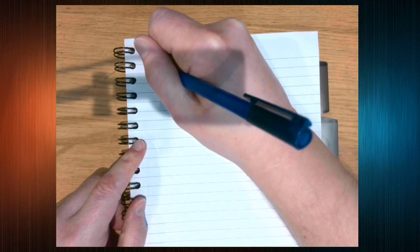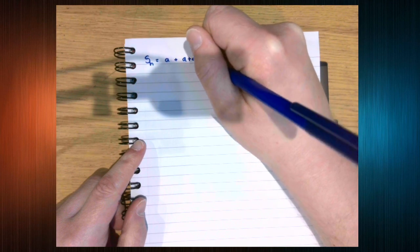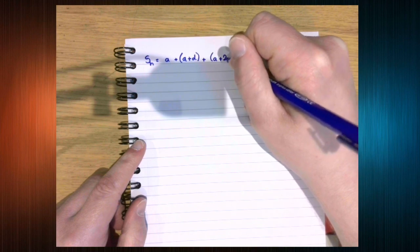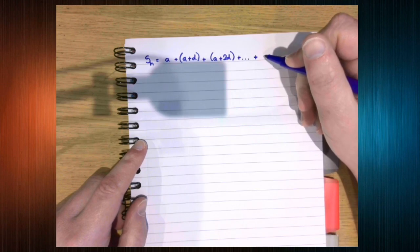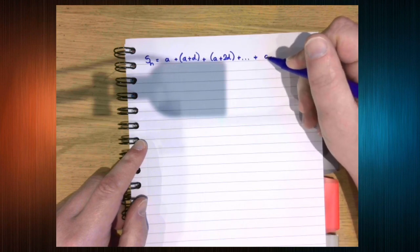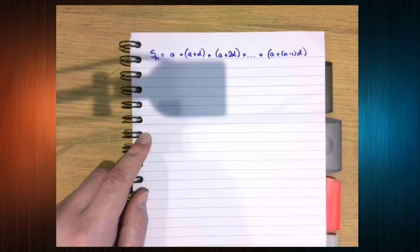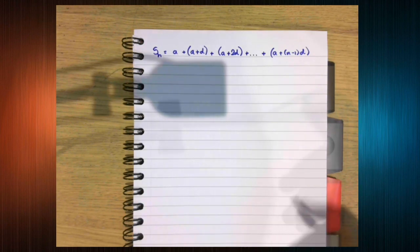As we saw, we can write the general arithmetic progression, arithmetic series, like this. Now you don't have to put brackets around each term, but I find it's easier to isolate so you can recognize what's going on. So what was the first thing Gauss did? He wrote the sequence, the series, backwards.